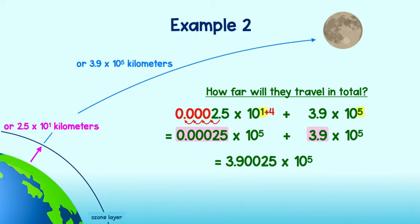We will add the first two factors and multiply by the common power of 10. We can keep our answer in scientific notation or we can write it in standard notation to see that they will travel a total of 390,025 kilometers to the moon.